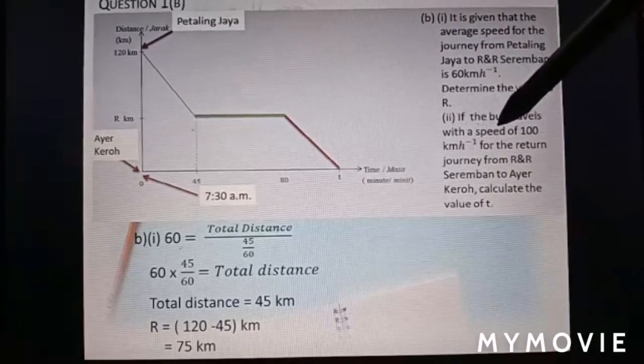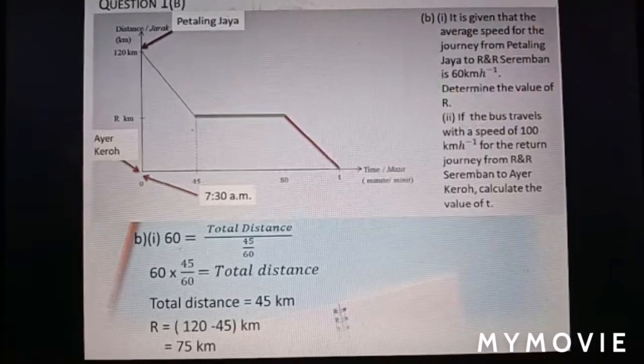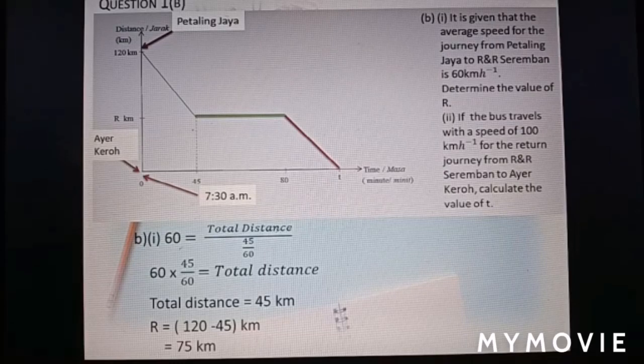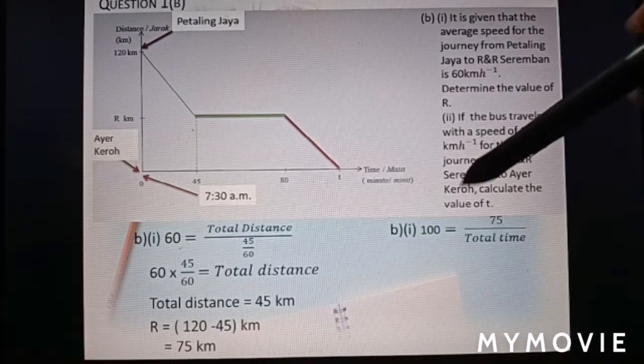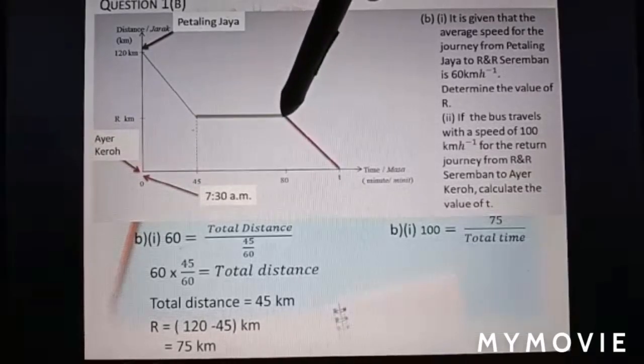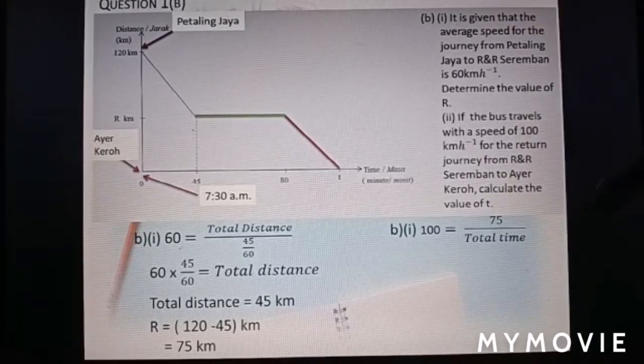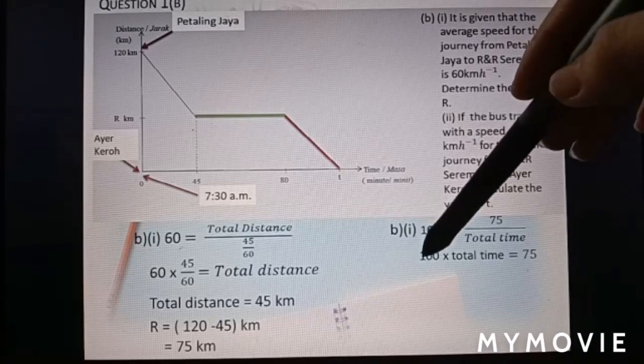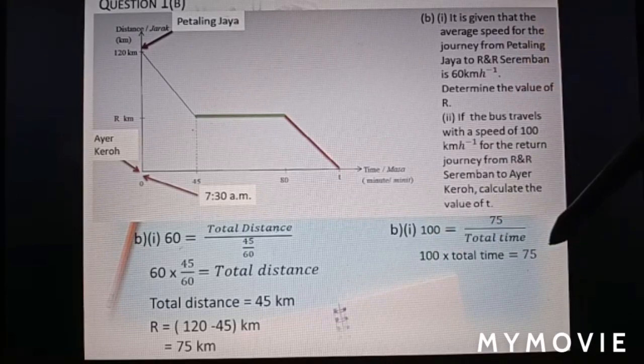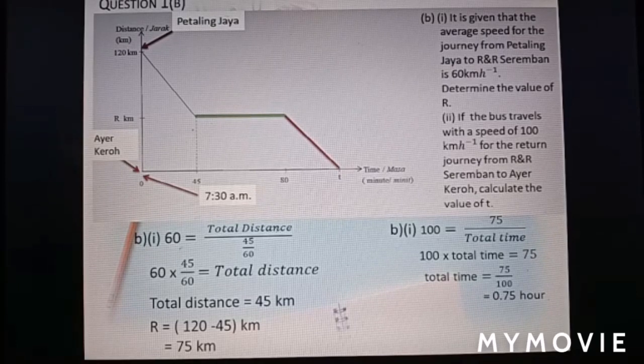Part C. If the bus travels with a speed of 100 km per hour for the return journey from R&R Seremban to Ayer Keroh, calculate the value of T. Value of T here. Okay, again, speed equal to distance over time. Speed 100 equal to distance 75. Because just now we found here R equal to 75. So, from R&R Seremban to Ayer Keroh, the distance is 75 over total time.